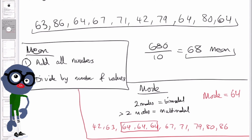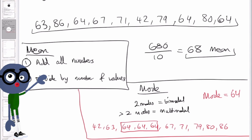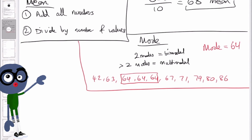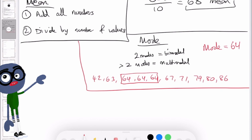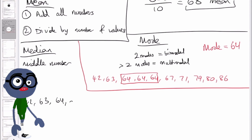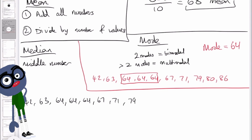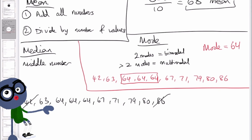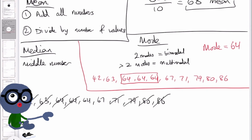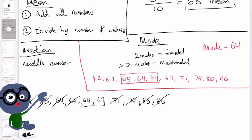For the median, we again put all the numbers in order from smallest to largest and then find the middle number. I'll write them out and cross out each number from both ends until I reach the centre. Crossing out 42 and 86, then 63 and 80, then 64 and 79, then 64 and 71 — we're left with 64 and 67.